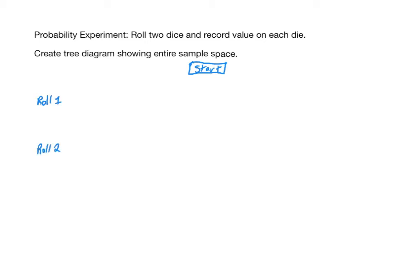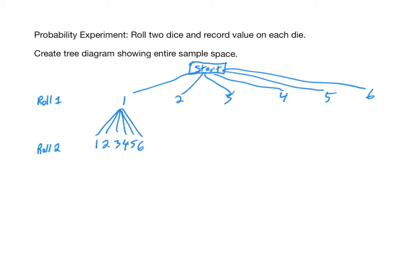What can happen on roll one? Well, you could get a one, a two, a three, a four, a five, or a six. Then for roll two, remember you want to consider what happened on roll one. So for example, if you got a one on roll one, roll two you could get a one, two, three, four, five, or six. On roll one, if you got a two, then on roll two you could get also a one, a two, a three, a four, a five, or a six. Because the first roll does not affect what happens on the second roll. The two rolls are independent of one another.